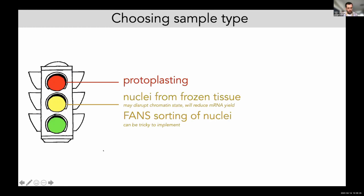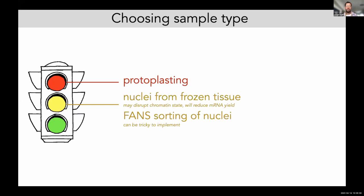When deciding on our sample type, we wanted to avoid using nuclei from frozen tissue. Frozen tissue will reduce the mRNA yield. Also — and this is more of a gut feeling rather than a scientific insight — from my PhD lab, my postdoc, and speaking with other people, frozen tissue can often have disrupted chromatin states. Assays like ATAC-seq and ChIP-seq don't seem to work as well compared to fresh tissue.